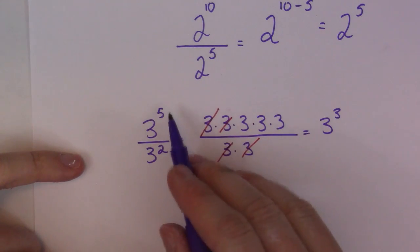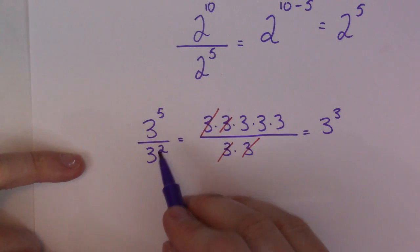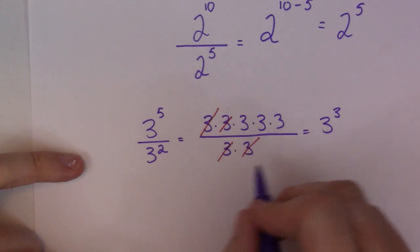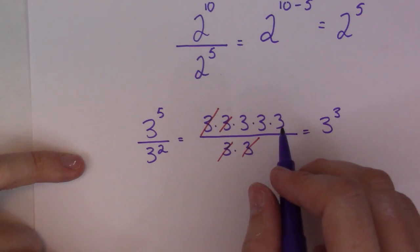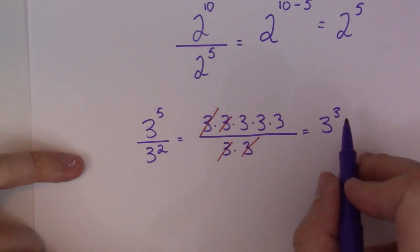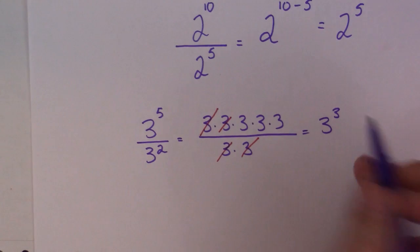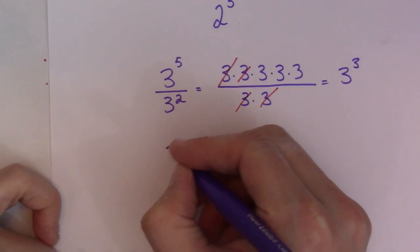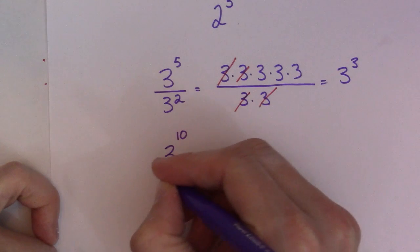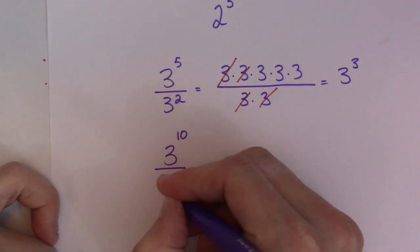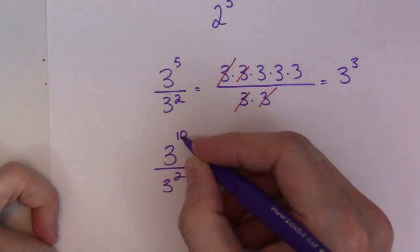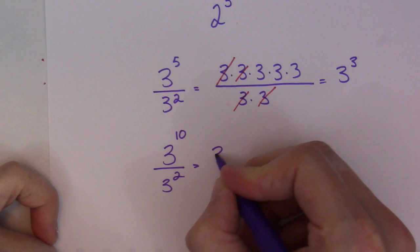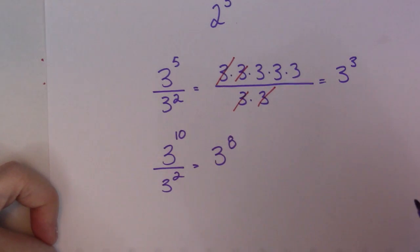So what I'm doing when I'm subtracting my exponents, when I divide powers with the same base, is I'm jumping this step right here — I jump the step to get 3 to the 3. Let me show you again how this works. 3 to the 10 divided by 3 to the 2: 10 subtract 2 is 8, and that equals 3 to the 8.